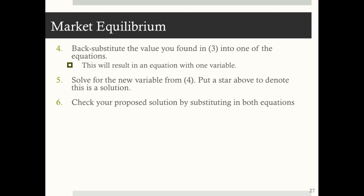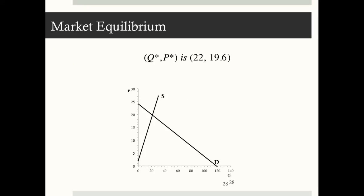Back-substituting Q star equals 22 into both equations to find P star and verify: using the supply equation, P star equals 2 plus four-fifths times 22, which gives 19.6. Using the demand equation, P star equals 24 minus one-fifth times 22, which also gives 19.6. The math checks out. The market equilibrium, the unique ordered pair (Q star, P star), is (22, 19.6), shown graphically as the intersection of the supply and demand curves.